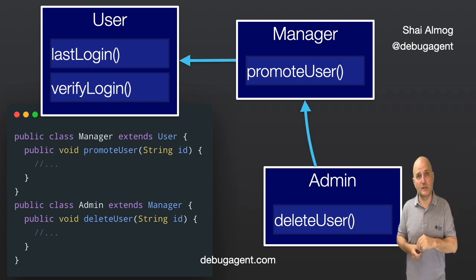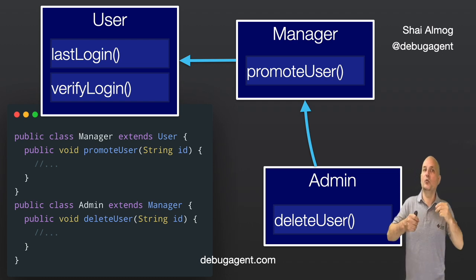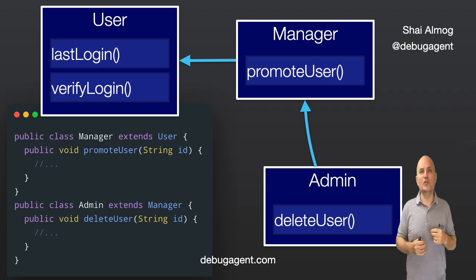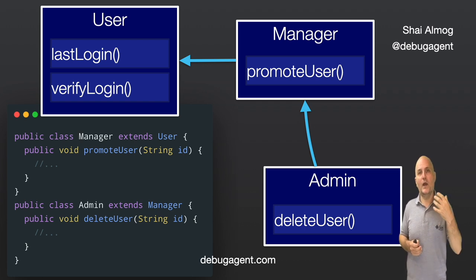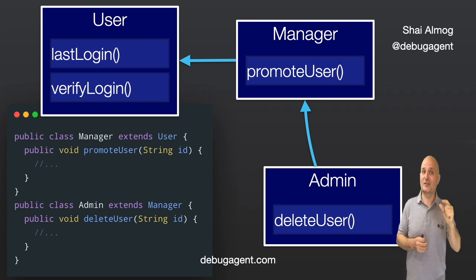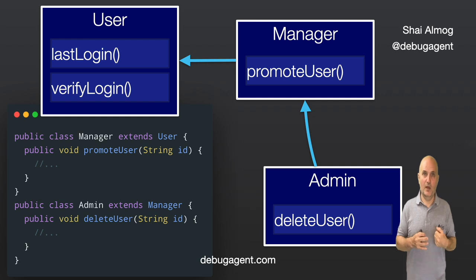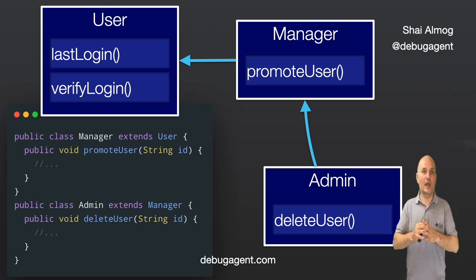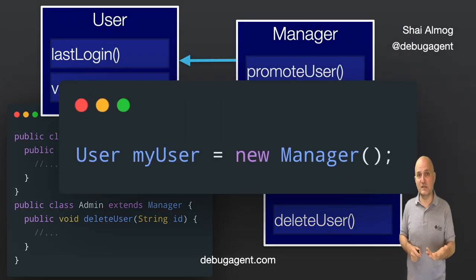Inheritance works like this: we use the extends keyword to inherit the capabilities of a parent class. Manager inherits all the capabilities of user, meaning all the public methods in user will just work on manager as if they were a user. The same is true for admin in both regards to manager and user. In fact, every object in Java extends — except for one — inherits from the object class. The one exception is the object class itself. If you don't write the extends clause, it's as if you wrote extends object. The object class defines some interesting methods like toString, equals, hashCode, and getClass — they are all available on any Java object.